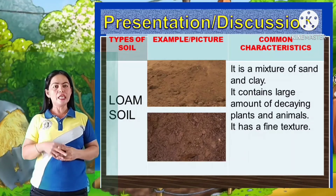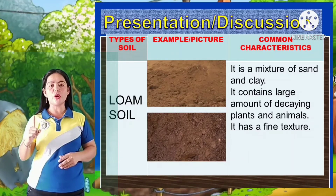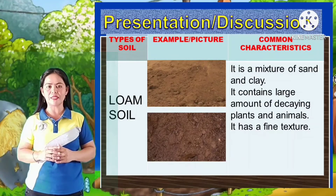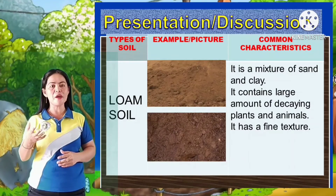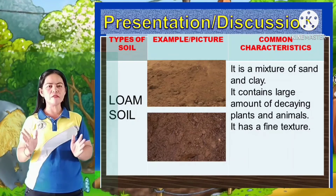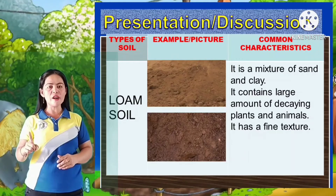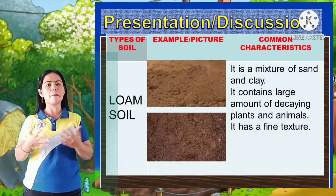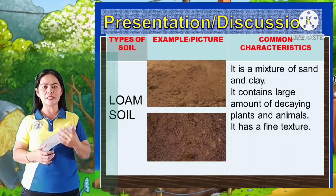Loam soil contains a large amount of decaying plants and animals, and it is the best soil for planting. It has a fine texture, is dark in color, has a moderate water holding capacity, and is slightly acidic.